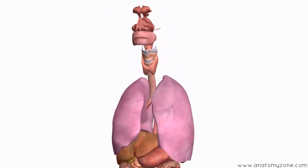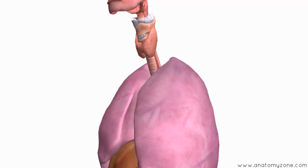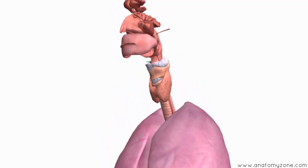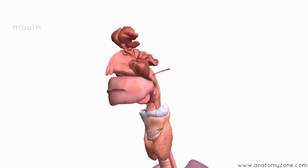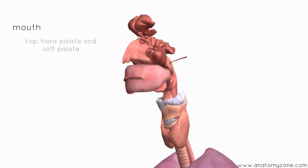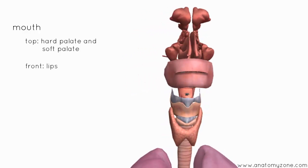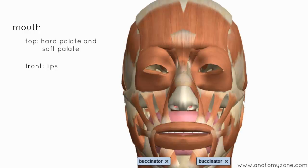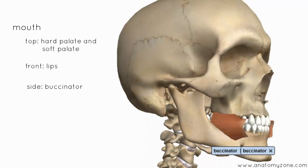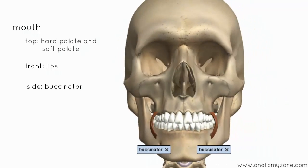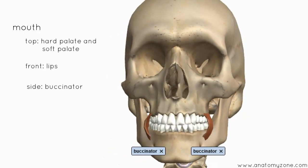We'll start proximally — we'll start at the mouth and work our way down, and take a look at some parts of the digestive system. Digestion begins at the mouth, and the mouth is formed by the hard palate and soft palate at the top. You've got the lips at the front. The side walls of the mouth are made up by a muscle called the buccinator muscle. And then you've got the teeth and tongue inside the mouth.